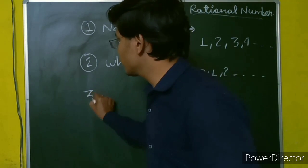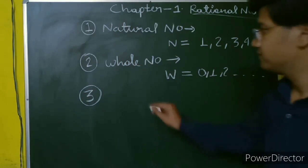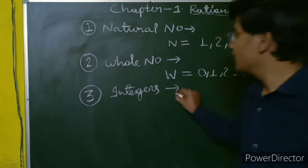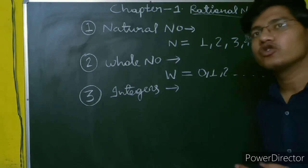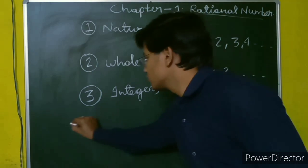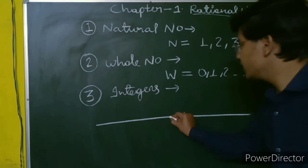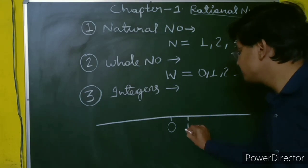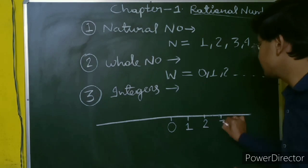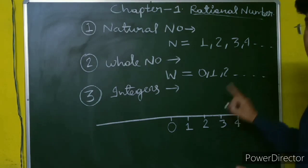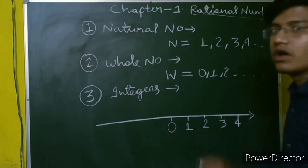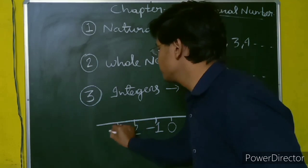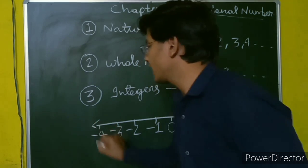The third type of numbers are integers. In last year you studied about the number line. On the number line we have three types of numbers. In the center is 0, on the right hand side we have 1, 2, 3, 4 and so on. On the left hand side of 0 we have minus 1, minus 2, minus 3, minus 4 and so on.